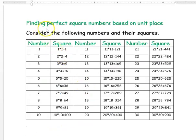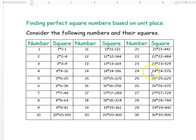The next question is how to find perfect square numbers based on the units place. We will do a few analyses. I have written numbers and their square numbers up to 30, and with this table we are going to do a few analyses based on the unit digit of the square numbers.